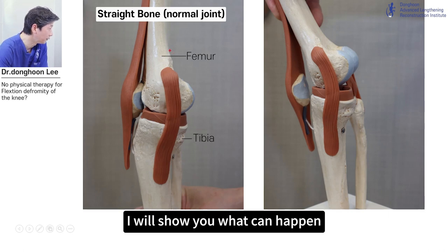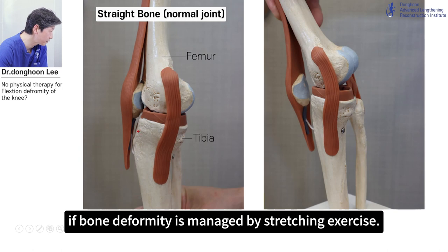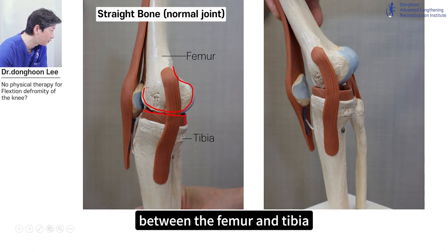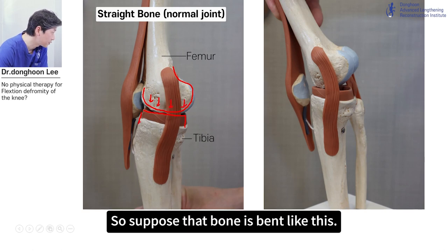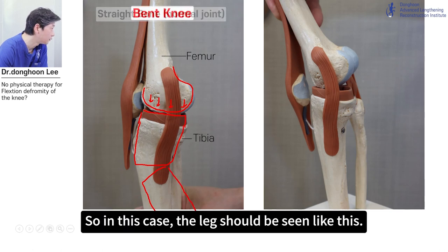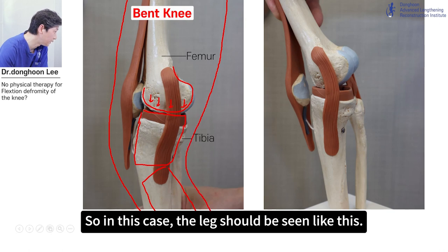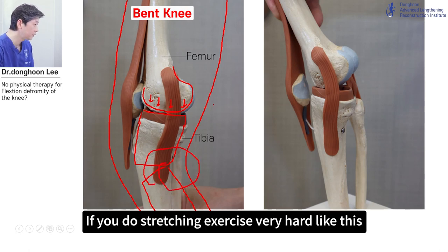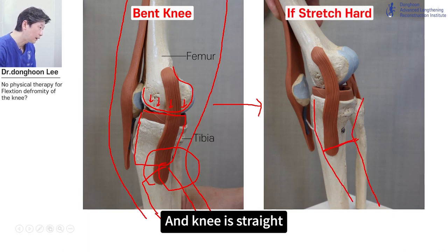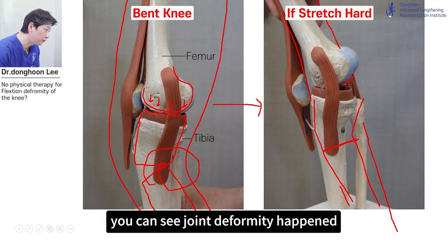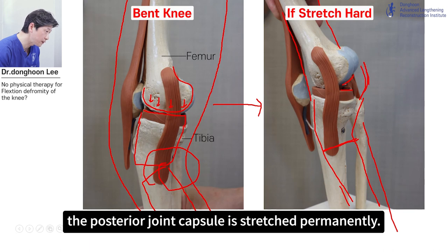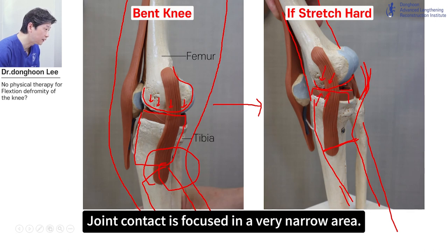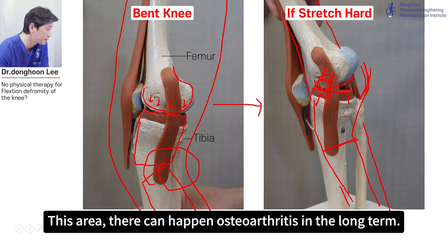I will show you what can happen if bony deformity is managed by stretching exercise. This is a straight bone with a normal joint — you can see the wide area of contact between the femur and tibia. Wide contact area prevents joint stress. Now suppose the bone is bent. The leg would look like this, and this should be corrected surgically. If you do stretching exercise very hard, the bony deformity is not changed but the knee appears straightened. You can see joint deformity happens — the posterior joint capsule is stretched permanently and joint congruency is changed. Joint contact is focused on a very narrow area, and in this area osteoarthritis can develop in the long term.